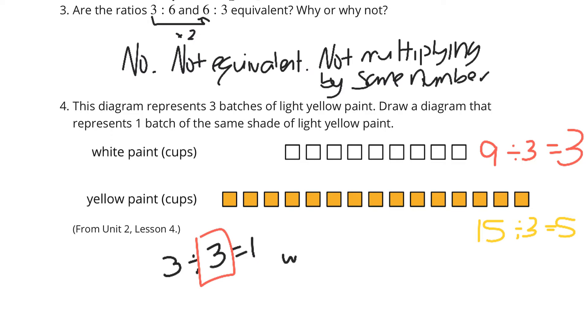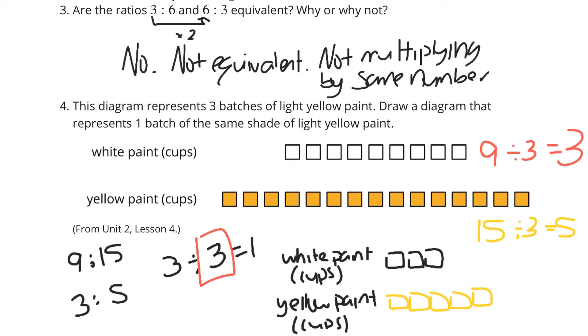So, for white paint, and that's in cups, we're going to have 3, and the yellow paint cups is going to be 5. Relating that to this lesson, 9 to 15 is equivalent to 3 to 5 because we're multiplying both of those by 1 third. All right, let's continue on.